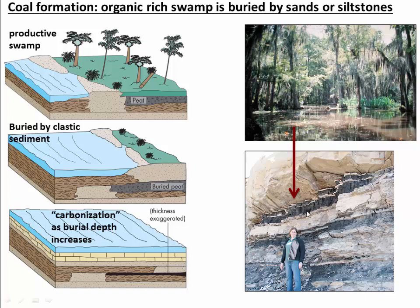And so this is what that might look like. Here's a nice dark coal bed, very organic rich, sandwiched between two layers of sandstone. So this coal has been buried to, maybe a kilometer or so. And that's pretty typical — we find coal in flat-lying beds that are basically the sedimentary record of extensive ancient swamps that have been condensed down into these narrow coal beds.